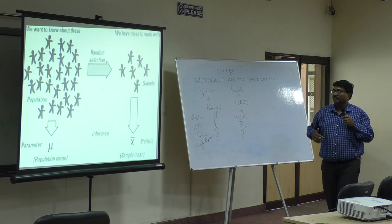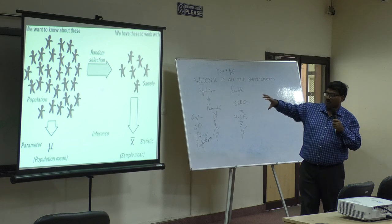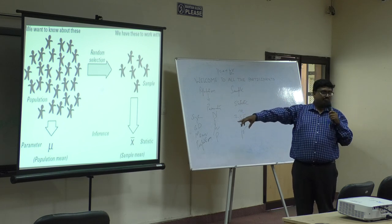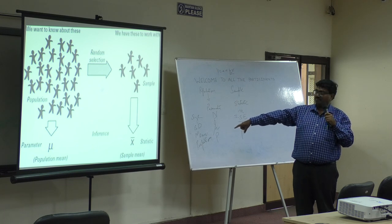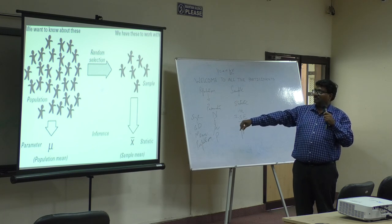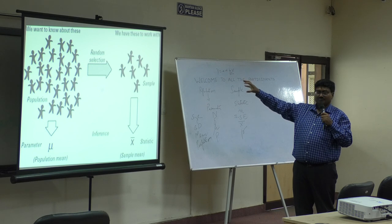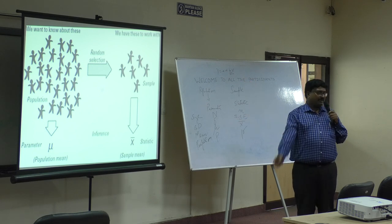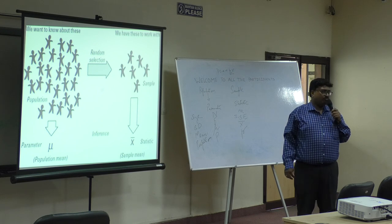Now, you know about parameter and statistic: mu is for population, x-bar is for a sample. We are trying to take a sample and work out a testing on that, and what holds good for the sample we say holds good for the entire population.